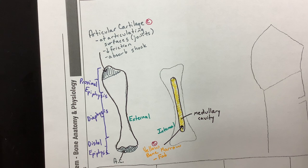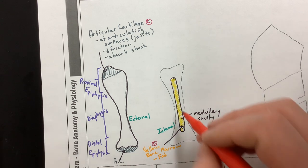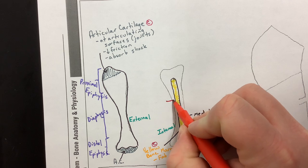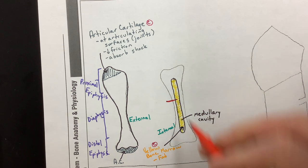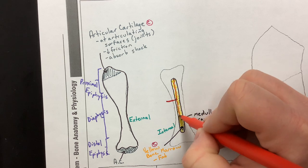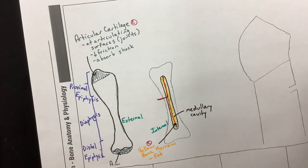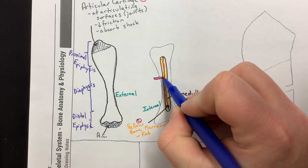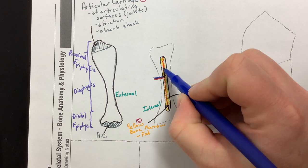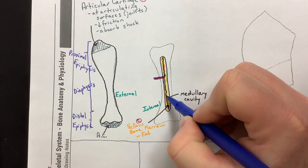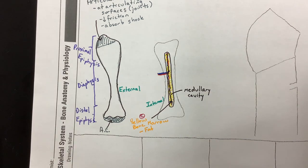Not only is there yellow bone marrow inside the medullary cavity, but there are blood vessels too. Red is used for arteries and blue for veins, as blood vessels run through and fill the medullary cavity.